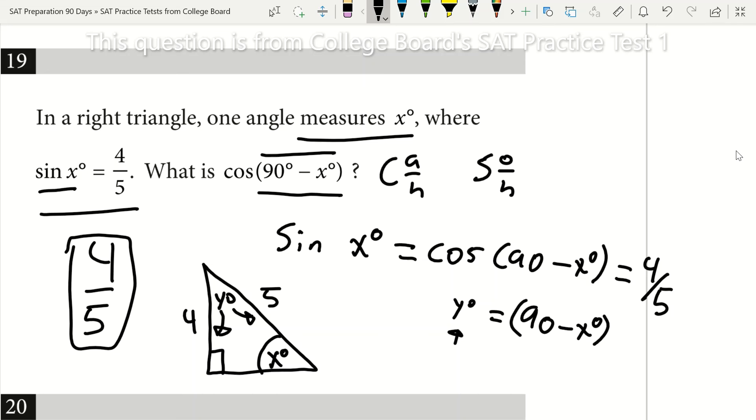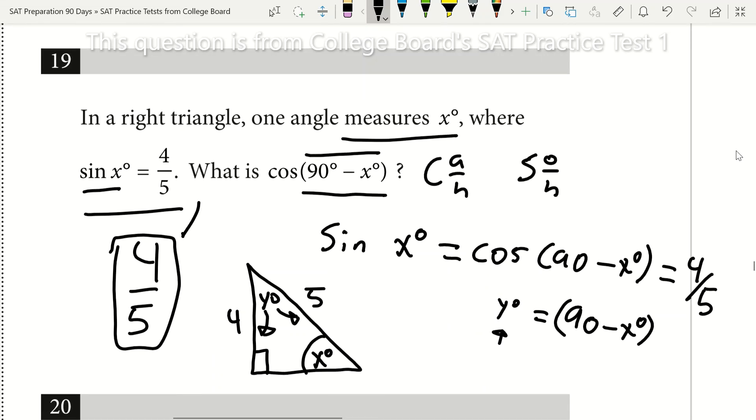So that shows you that they are going to be equivalent, and therefore if you know that, then you don't have to write anything other than 4 fifths. Because you immediately recognize when you're told that the sine of x is 4 fifths, that the cosine of 90 minus x must also be 4 fifths. So that right there can save you a lot of time.